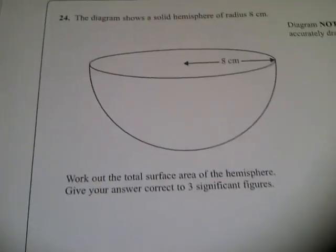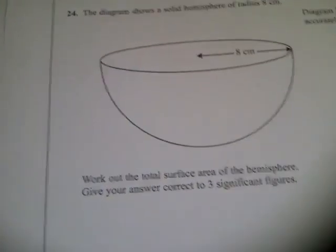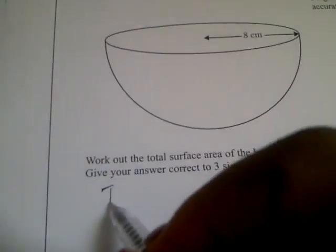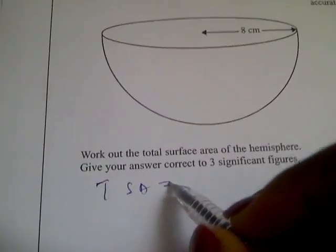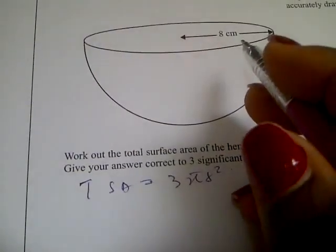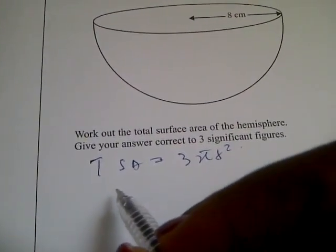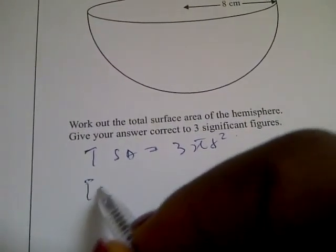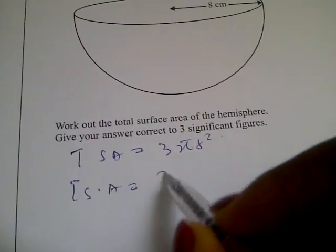of the hemisphere. Give your answer correct to three significant figures. Now, the total surface area of a hemisphere is equal to 3πr². We are given that r is 8 cm, so TSA equals 3